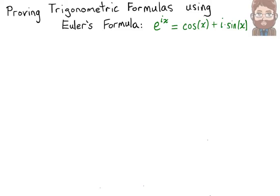We're going to prove some formulas from trigonometry directly from Euler's formula: e to the ix equals cosine x plus i times sine x. First, we're going to prove that sine squared of x plus cosine squared of x is equal to 1.